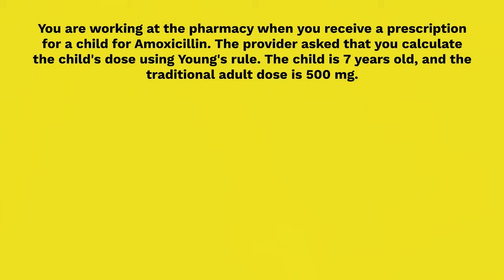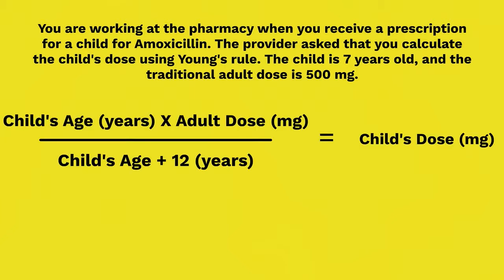You're back at the pharmacy, but this time the provider asks that you calculate the dose using Young's Rule. The child is 7 years old and the traditional adult dose is 500 milligrams. Referencing our original equation, we need the child's age and the adult dose, both of which the problem gives us. Go ahead and try to solve this equation using Young's Rule now.